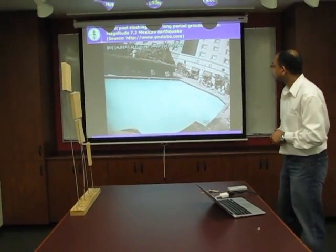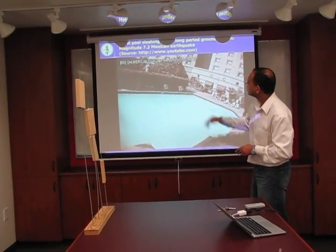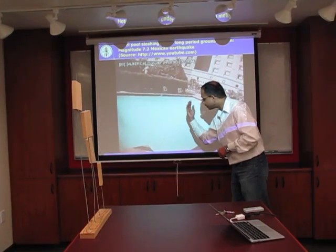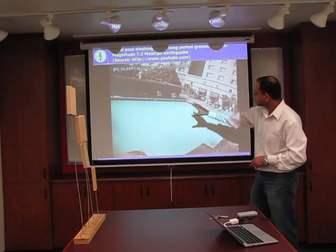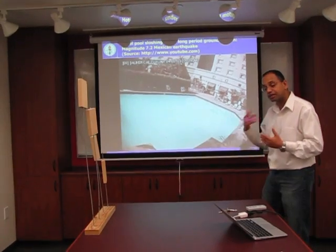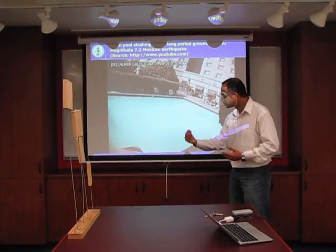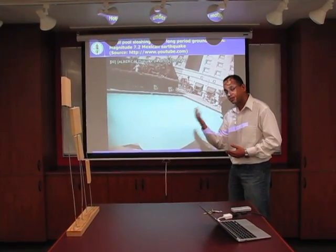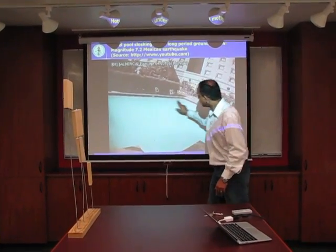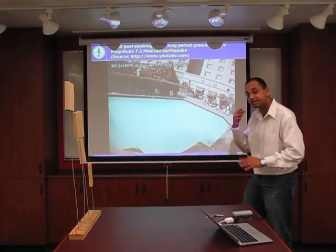Here is an example of such motions from the Mexicali earthquake, a magnitude 7.2 earthquake from a couple of years back. What you're seeing is the swimming pool of a hotel, with a camera sitting on a very stiff, rigid post overlooking the pool. The earthquake happens and the high-frequency waves, which travel the fastest, arrive first and get the stiff post tremendously excited — the camera goes back and forth several cycles very quickly. During this time, the swimming pool water line remains calm; it is not excited by this high-frequency motion at all.